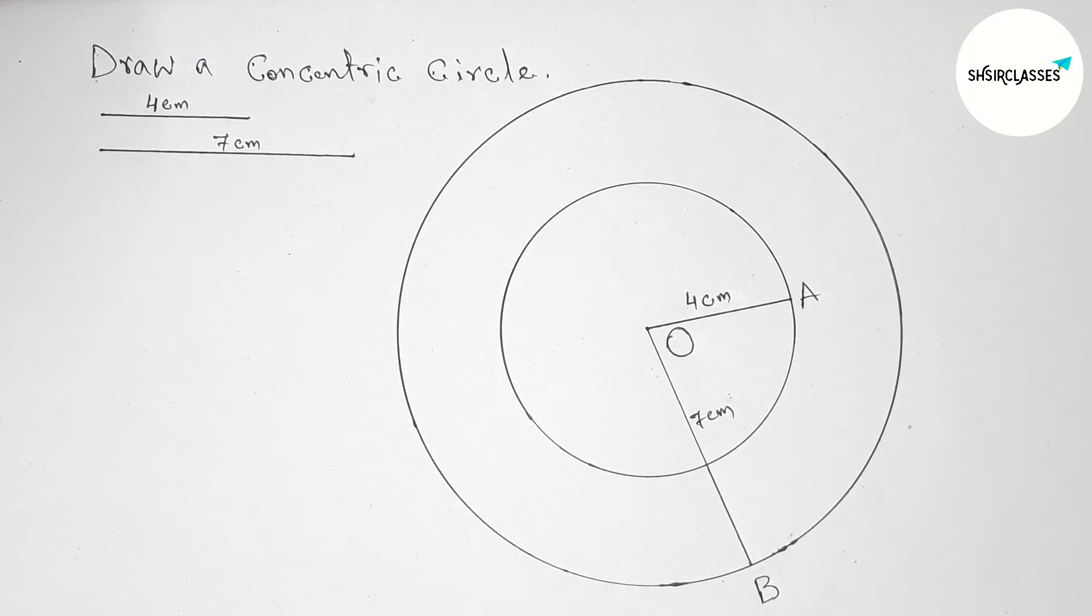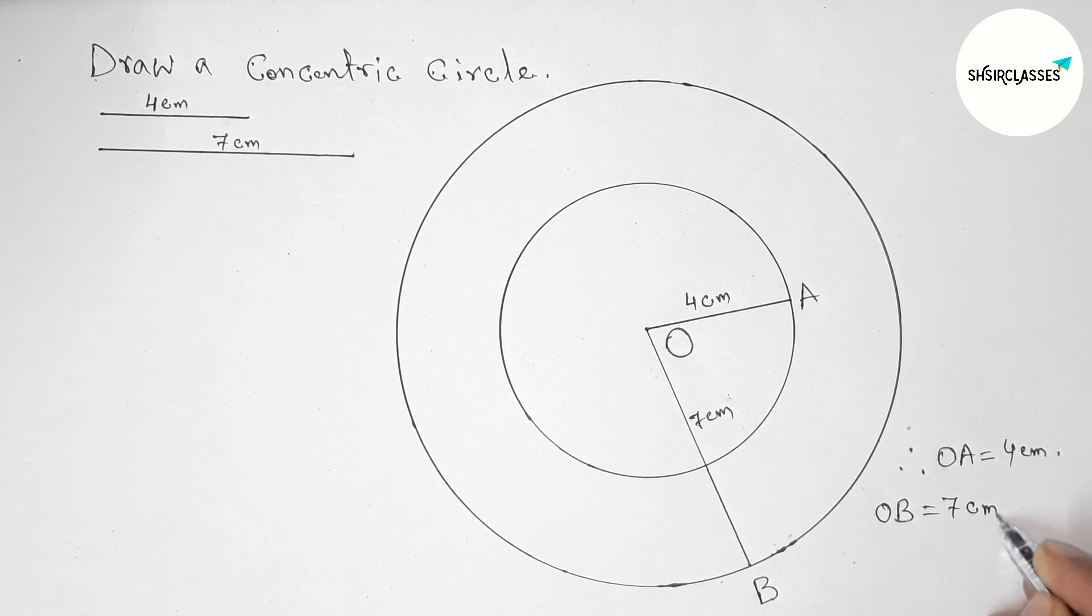By this way you can construct a concentric circle. Therefore here OA that is four centimeter, OB this is equals seven centimeter. That's all, thanks for watching, please share it with your friend.